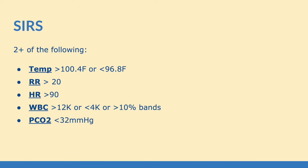SIRS is defined as having two or more of the following: a temperature greater than 100.4°F or less than 96.8°F, a respiratory rate greater than 20, a heart rate greater than 90, white blood cells greater than 12,000 or less than 4,000, or 10% bands, and a PCO2 less than 32. If you have two or more of these, you have met criteria for SIRS.